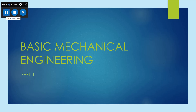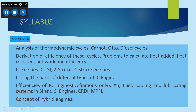Welcome students to the first lecture of basic mechanical engineering — this is the first part of this course. The syllabus consists of two parts: the first part is for basic civil engineering and the second part is for basic mechanical engineering, and there are six modules. Modules one, two, and three will be for basic civil engineering, and modules four, five, and six will be for basic mechanical engineering.